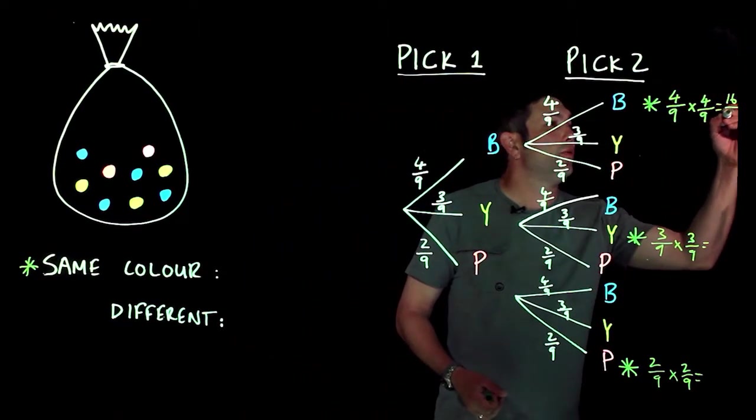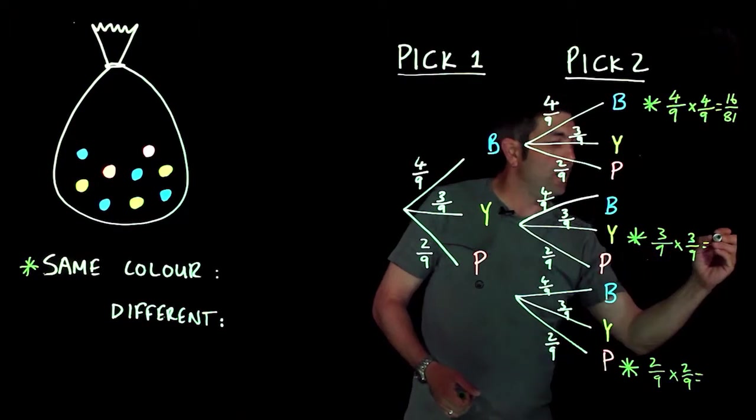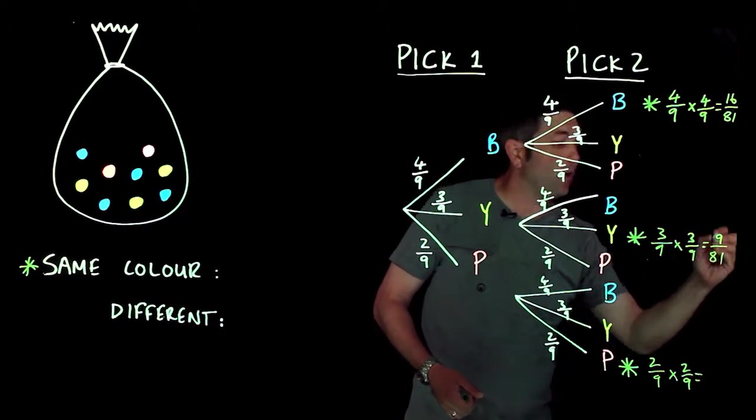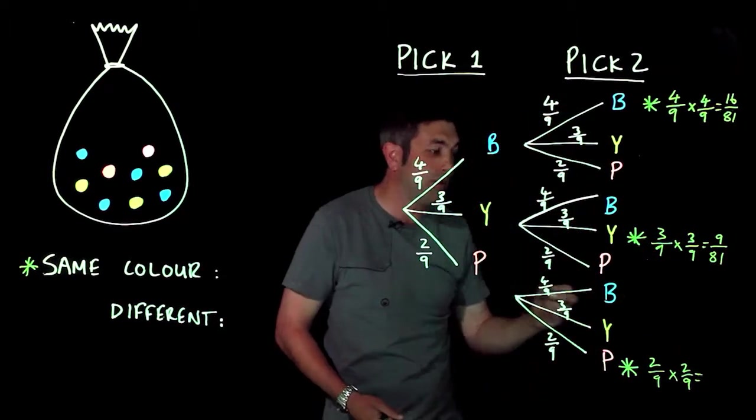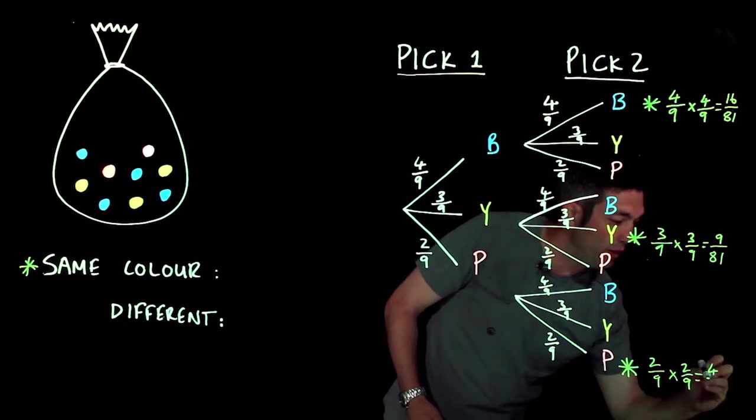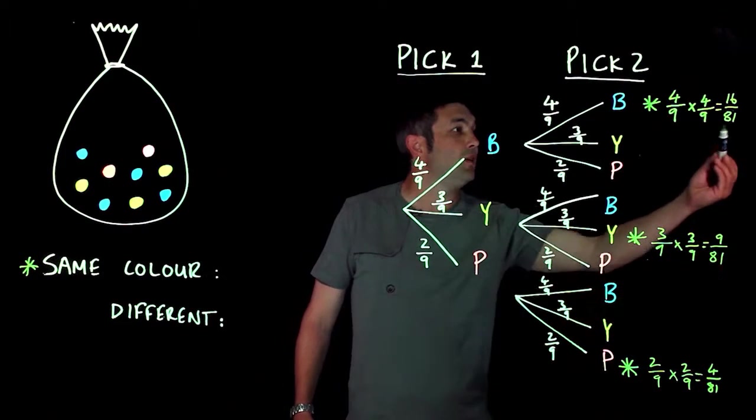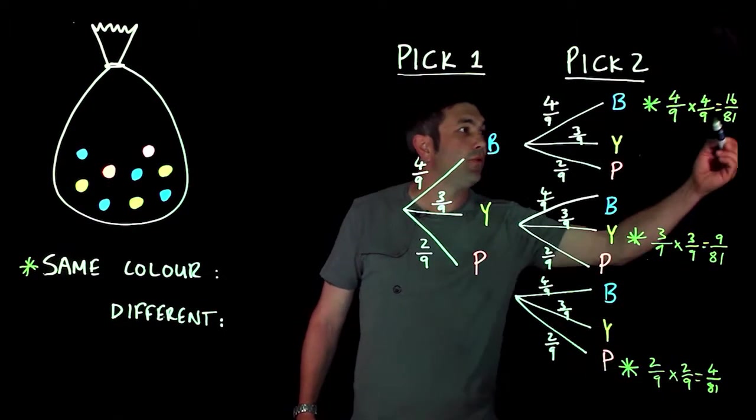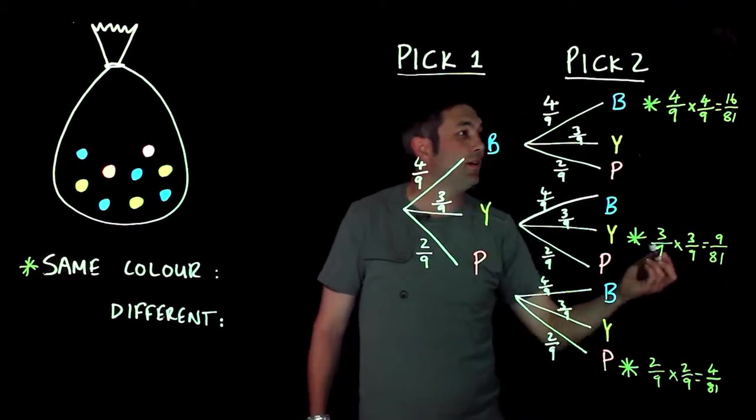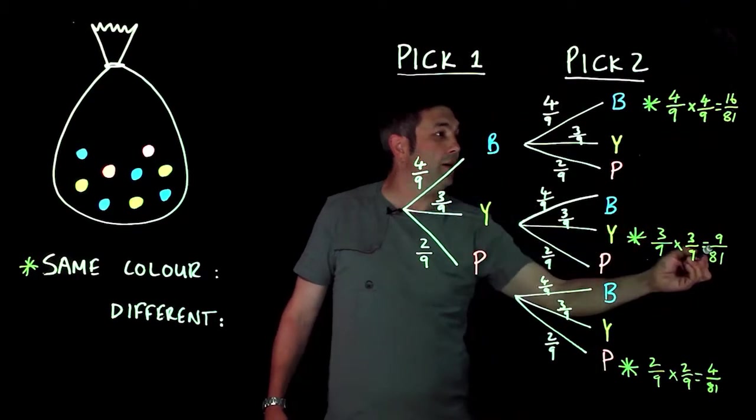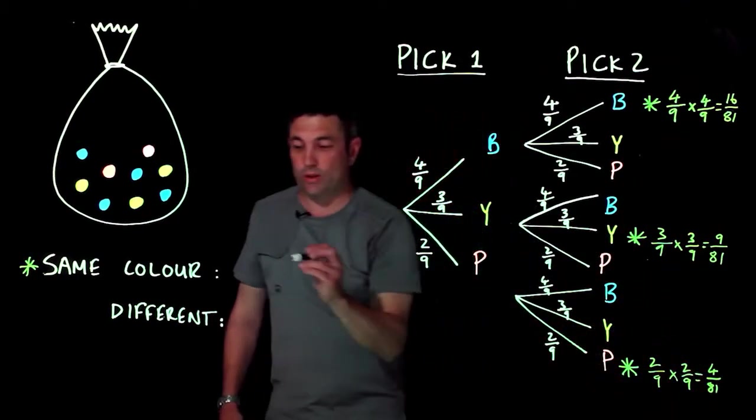And we get four over 81. Now because I didn't simplify, all my denominators, all the bottom numbers of the fractions are 81. It makes it a lot easier to add. So I'm going to do 16, 9, and 24.